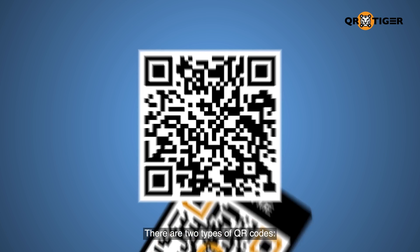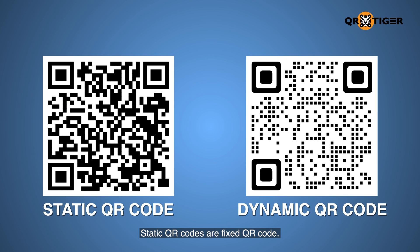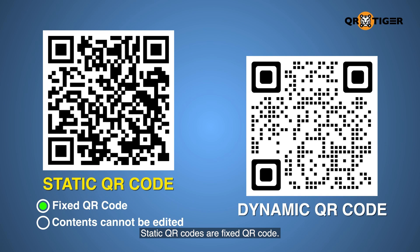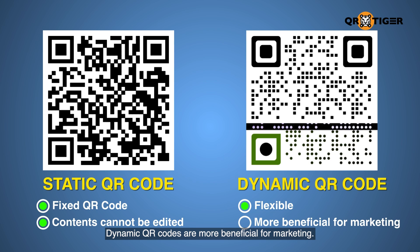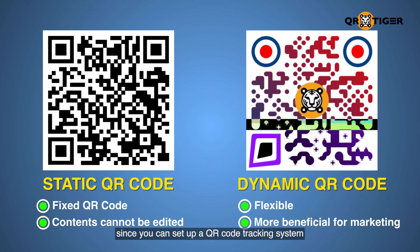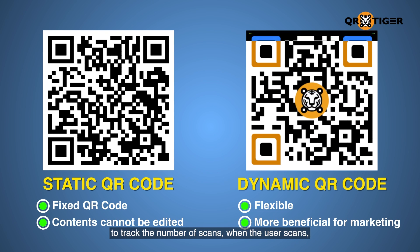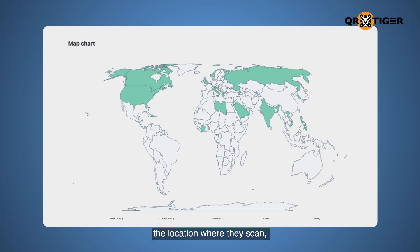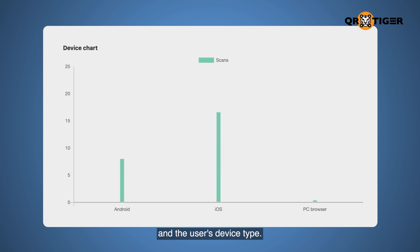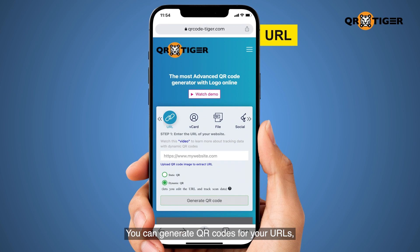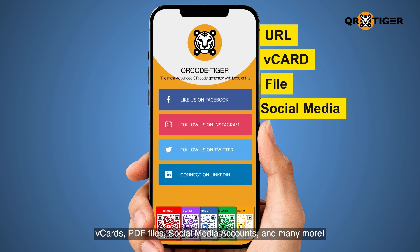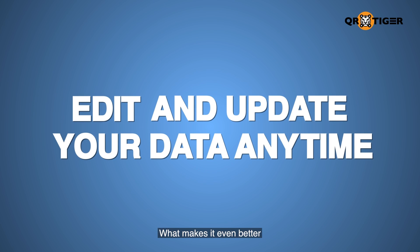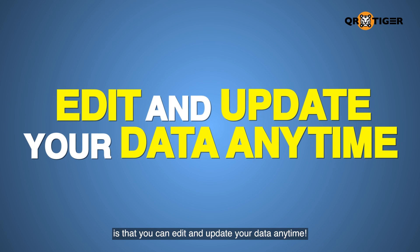There are two types of QR codes: static and dynamic. Static QR codes are fixed and their contents cannot be edited. Dynamic QR codes, on the other hand, are the flexible type. They're more beneficial for marketing since you can set up a QR code tracking system to track the number of scans, when the user scans, the location where they scan, and the user's device type. You can generate QR codes for your URLs, vCards, PDF files, social media accounts, and many more. What makes it even better is that you can edit and update your data anytime.